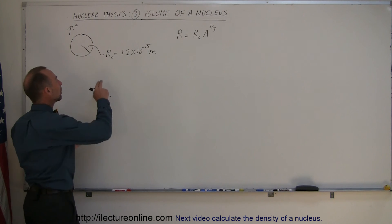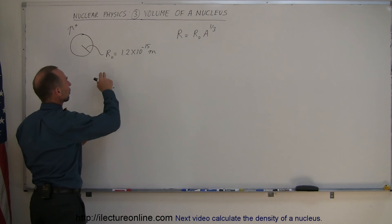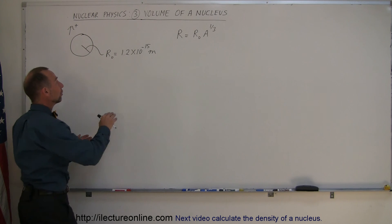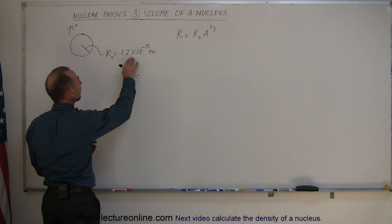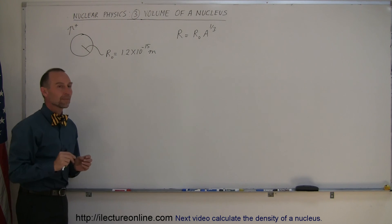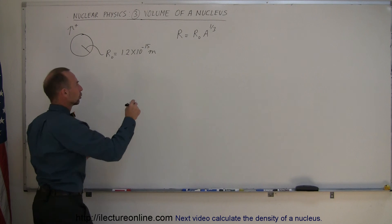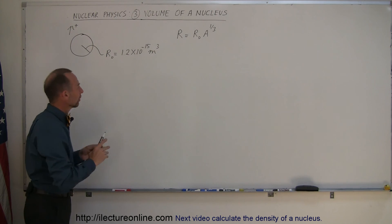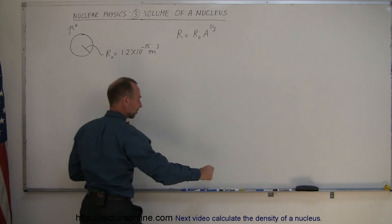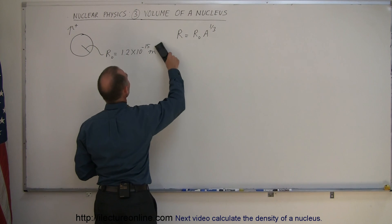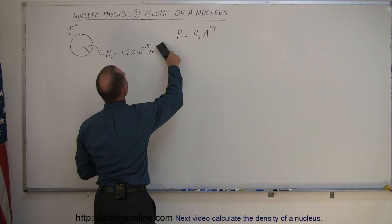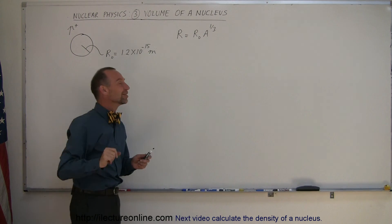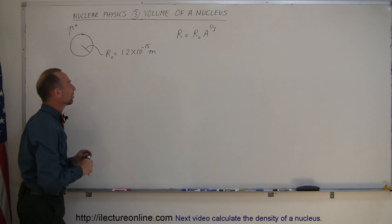It has been discovered that the radius of a proton, which is about the same size as the radius of a neutron, is 1.2 times 10 to the minus 15 meters — linear units.